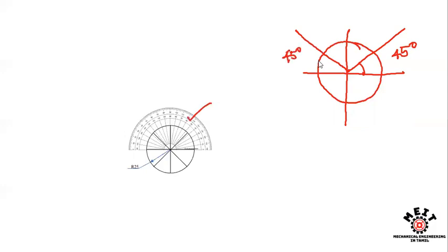After that, you have to extend the line. If you extend the line, you have to put a part of the circle on the right side. This is the way we can divide the circle into 8 equal parts.